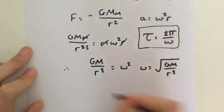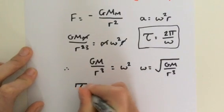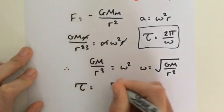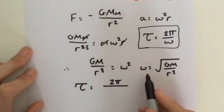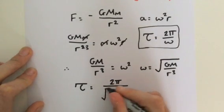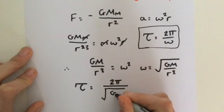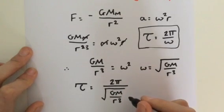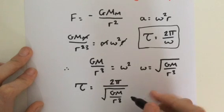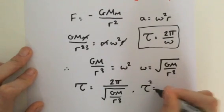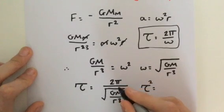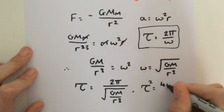Therefore, our τ = 2π/ω. Well, ω = √(GM/r³). Now, if we square both sides, we get τ² = 4π².